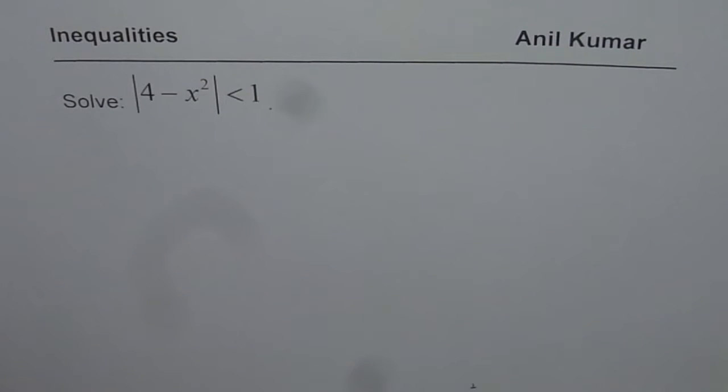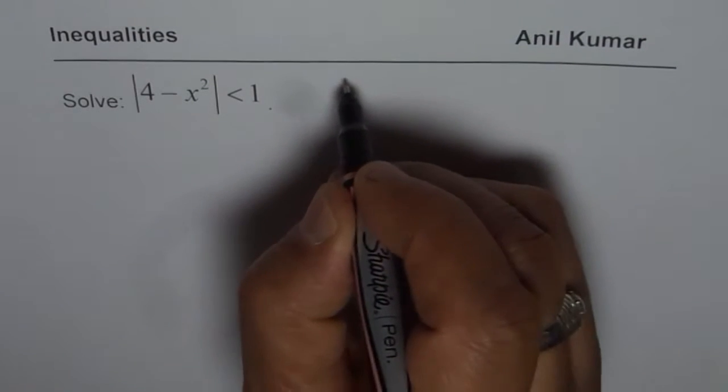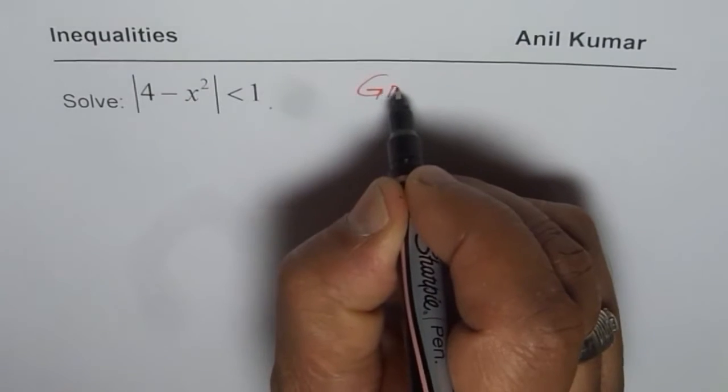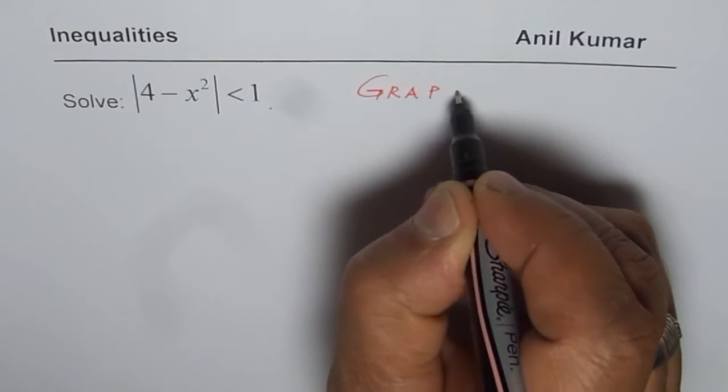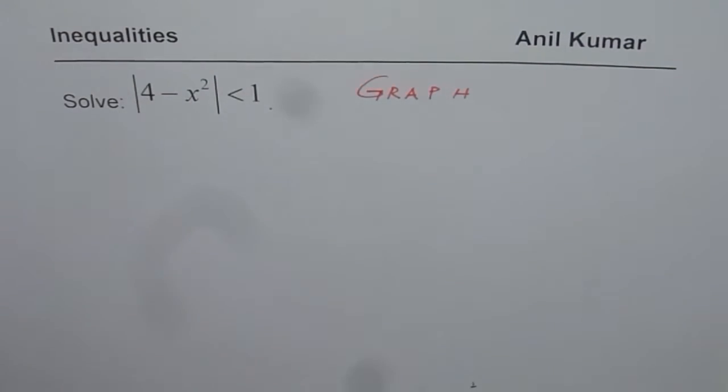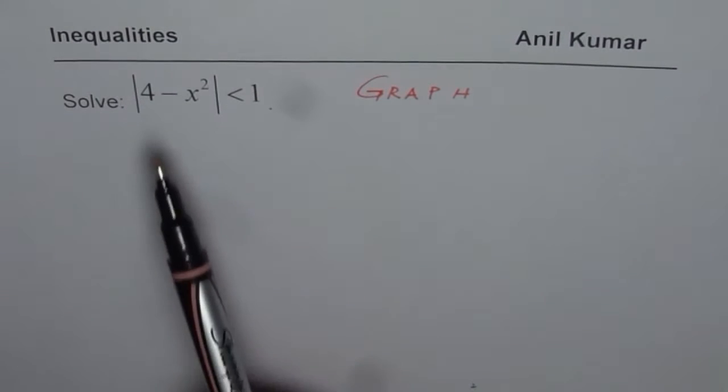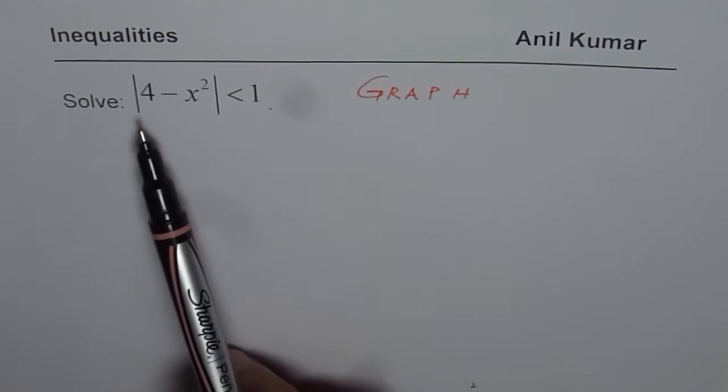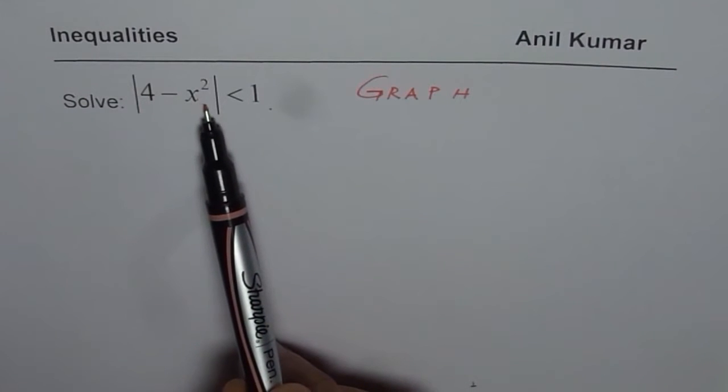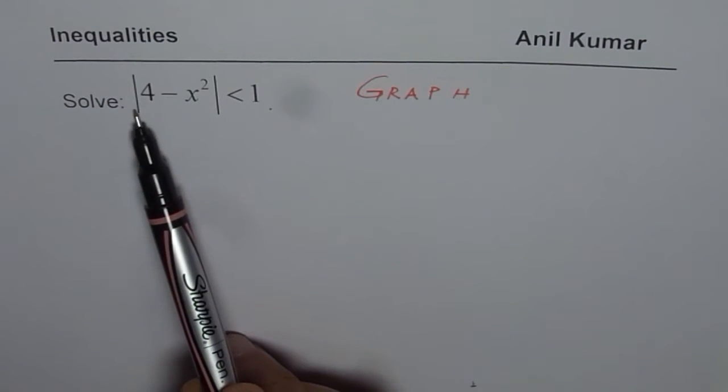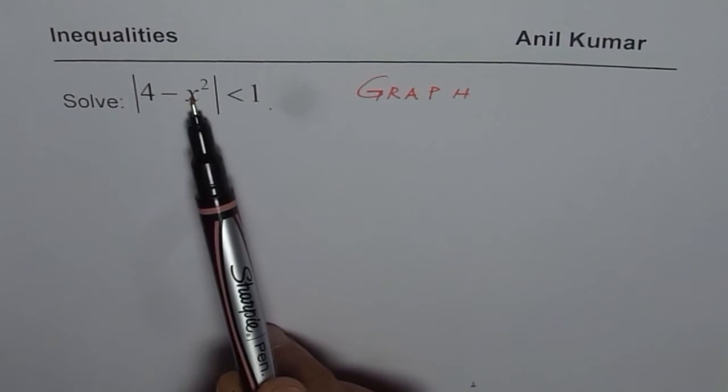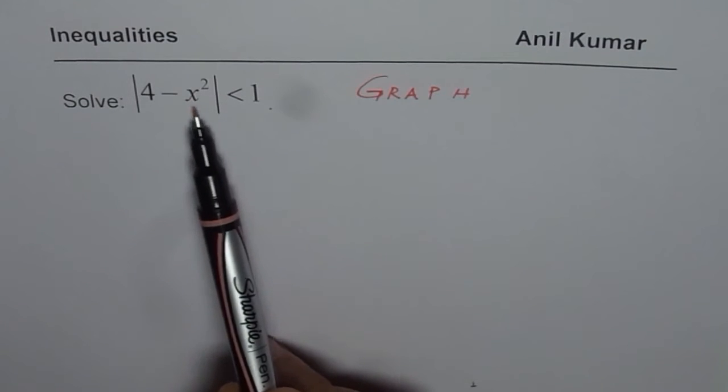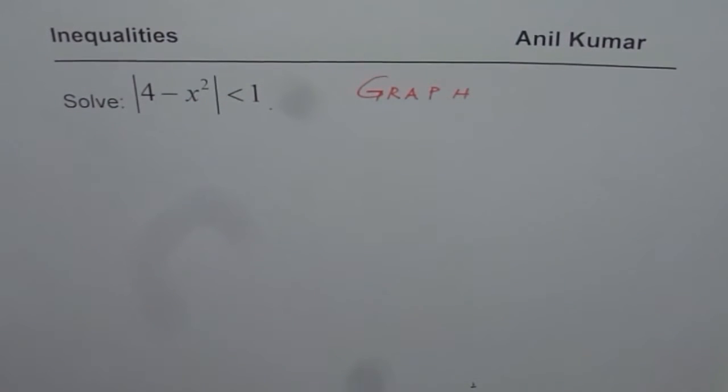The best solution or the fastest way of solving this particular question should be using graph. So we will actually use a graph approximately to solve this particular question. So let us graph 4 minus x squared, and then we will draw absolute value of 4 minus x squared, and then find less than 1 and find the solution.